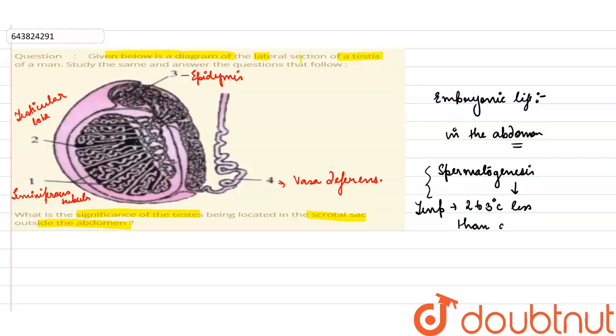The temperature required is about 2 to 3 degrees less than abdominal temperature. So what happens at birth?